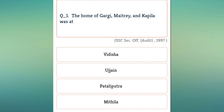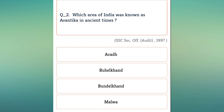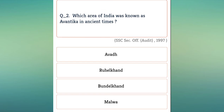The home of Gargi, Matri, and Kapila — where was their home? Which area of India was known as Avantika in ancient times?